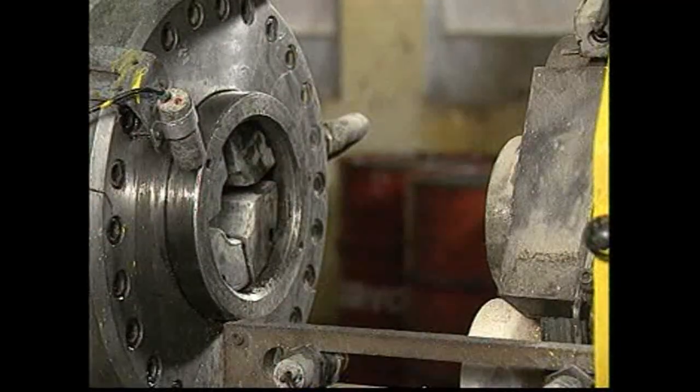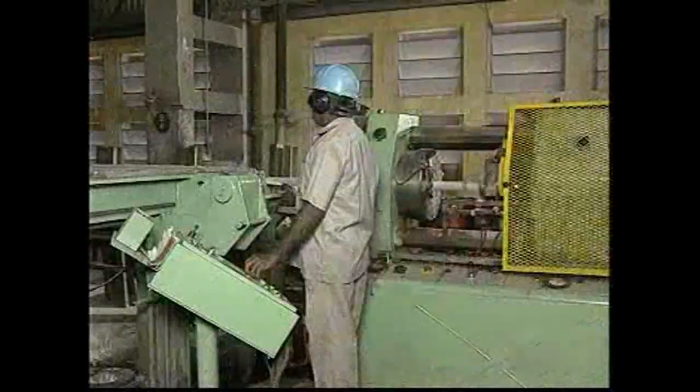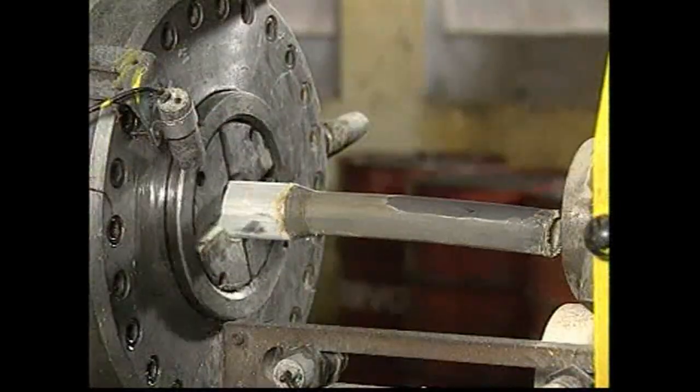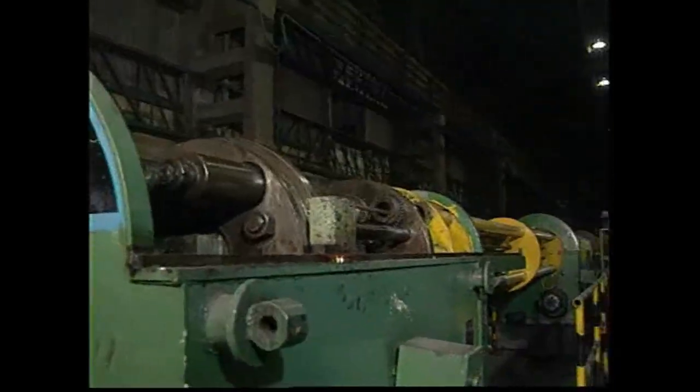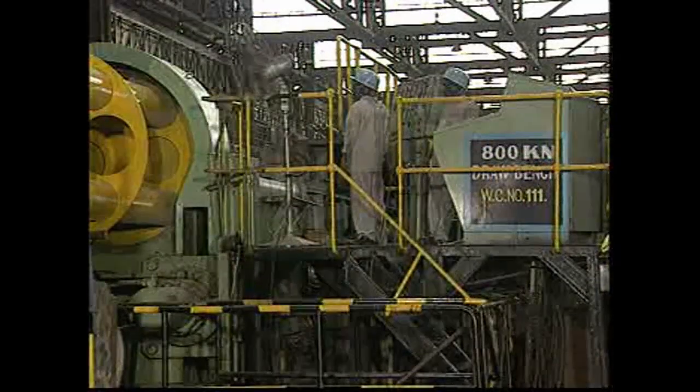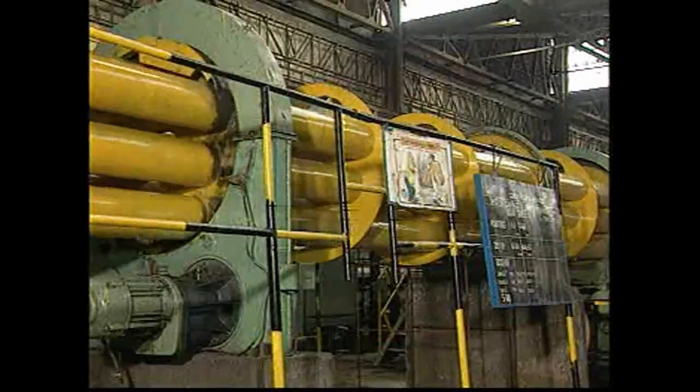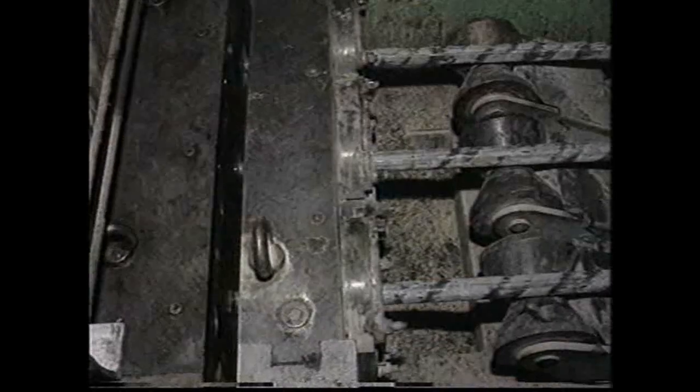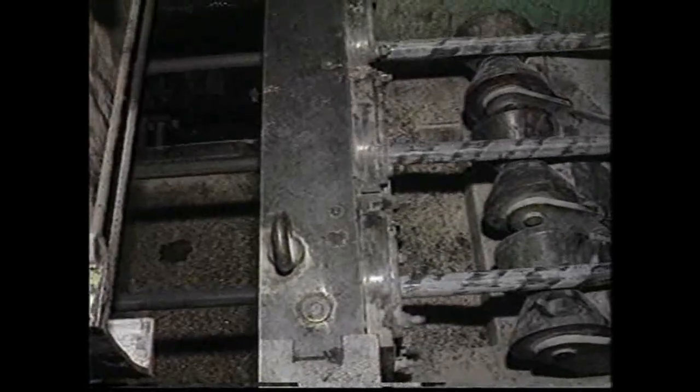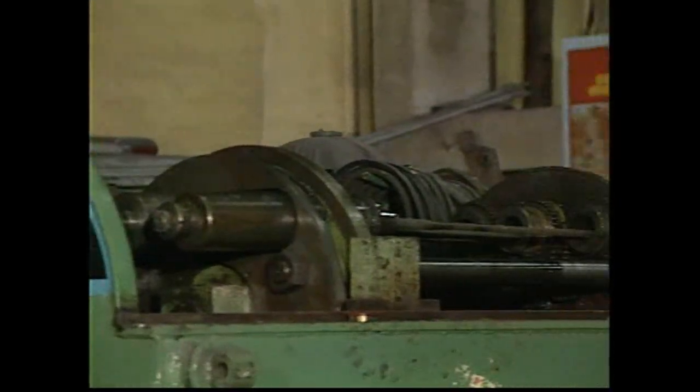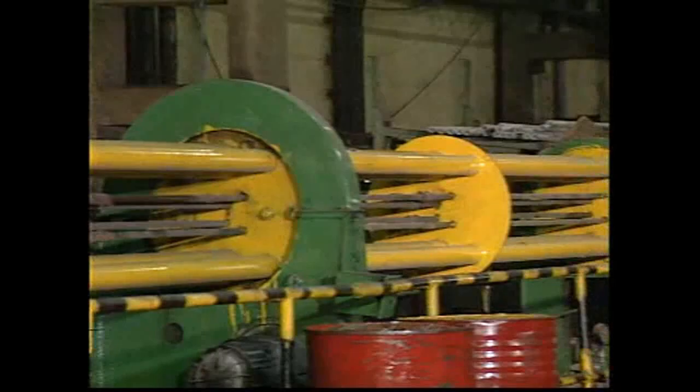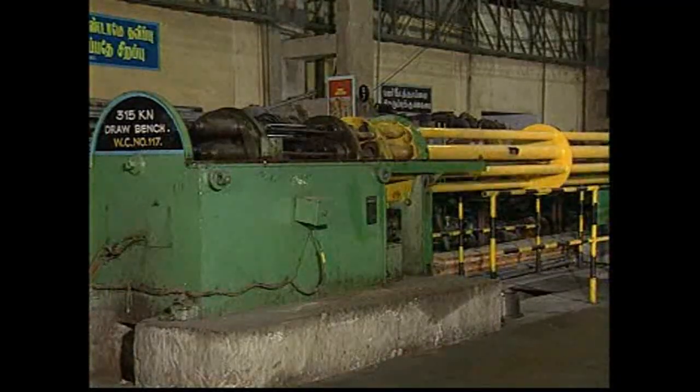A push-pointing machine facilitates easier entry of the die into the draw bench by reducing the diameter of the hollows at one end for a length of about 350mm. BHEL SSTP has three draw benches of different capacities. An 800 kN draw bench, a fully automatic one with three-tube drawing capability can draw from 16 to 63.5mm, up to a maximum length of 16 meters. Another draw bench of 315 kN capacity and three-tube capability can draw from 16 to 63.5mm, up to a maximum length of 16 meters.